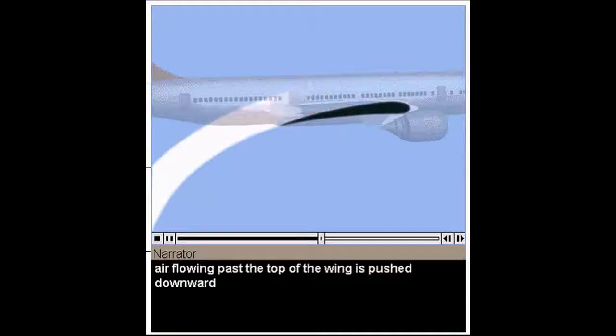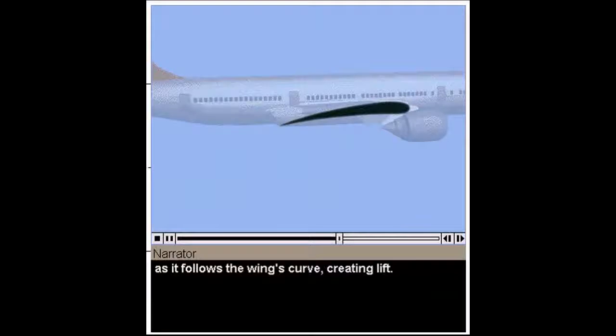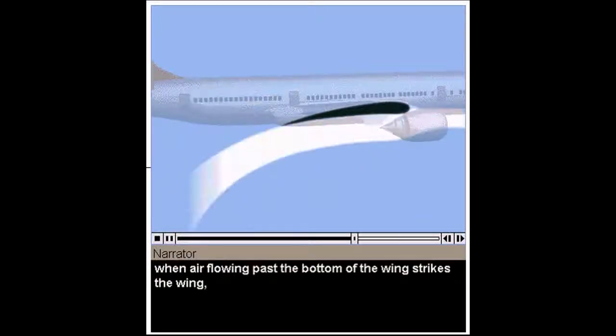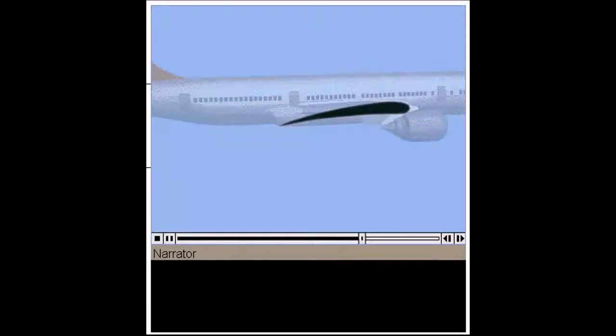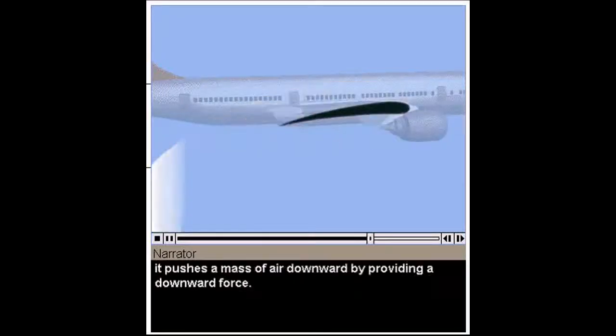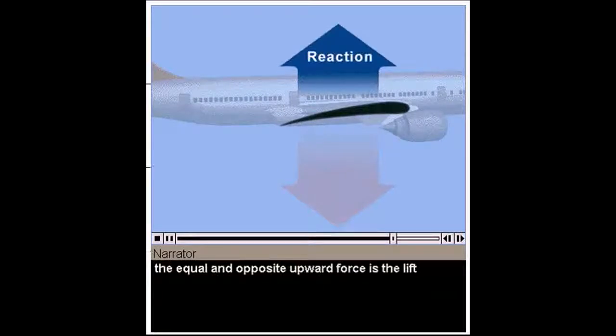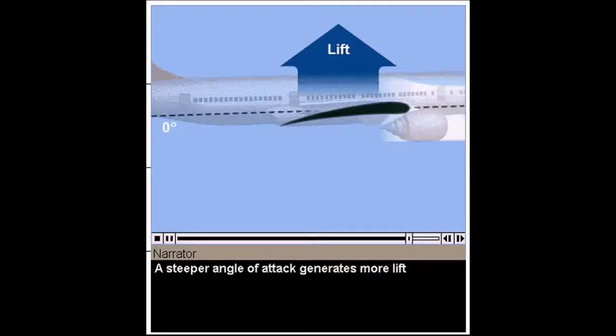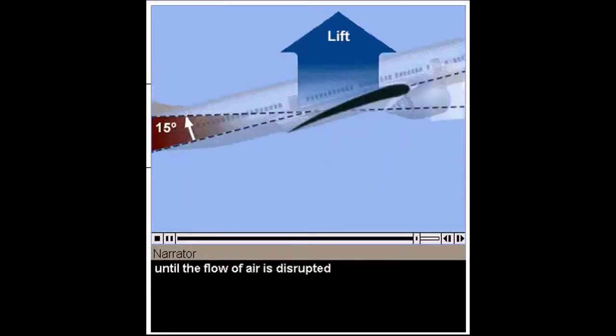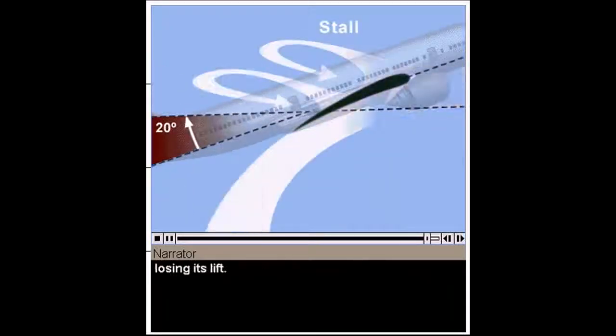Due to the Coanda effect, air flowing past the top of the wing is pushed downward as it follows the wing's curve, creating lift. Lift is also created when air flowing past the bottom of the wing strikes the wing and is pushed downward. As the wing moves through the air, it pushes a mass of air downward by providing a downward force. Following Newton's Third Law, the equal and opposite upward force is the lift that keeps the airplane in the air. A steeper angle of attack generates more lift until the flow of air is disrupted and the wing stalls, losing its lift.